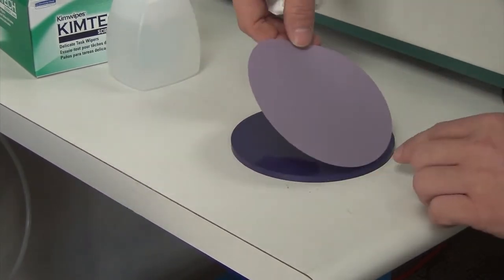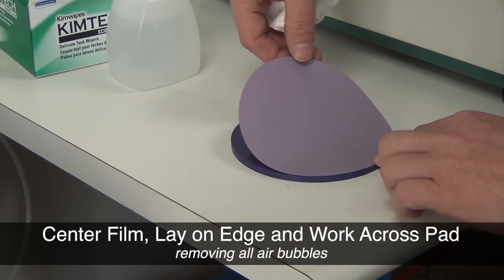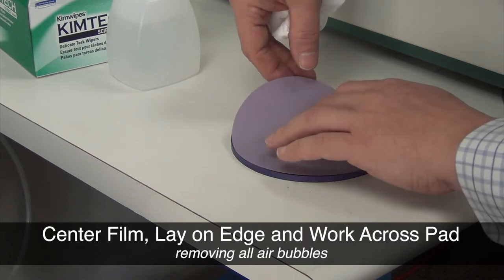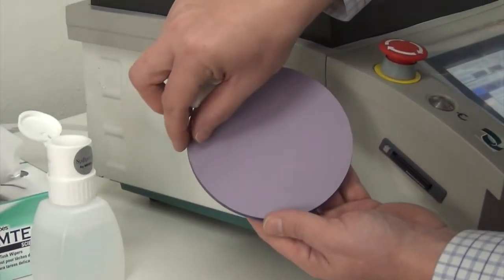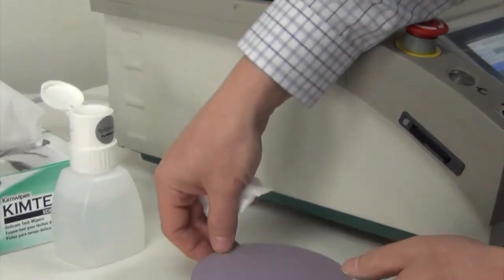Be sure the film is centered when placed on top of the pad. Start with the edge and walk the film forward. As you can see, this film is well centered. There is no half moon or color of the pad coming through.